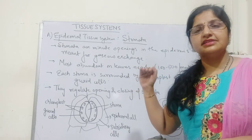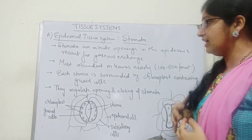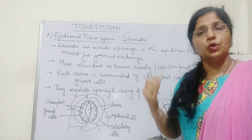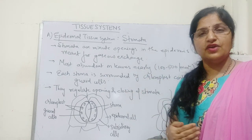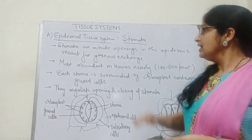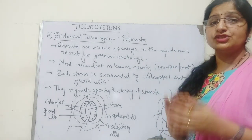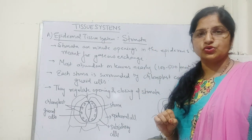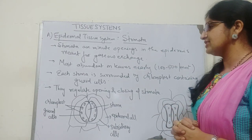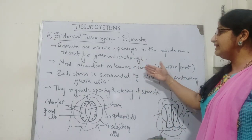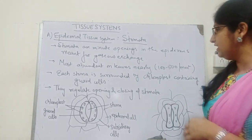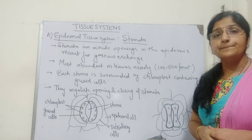A very important characteristic feature of the epidermal tissue system is the stomatal apparatus. The epidermis lining possesses certain openings for the exchange of gases during photosynthesis and to allow a little water evaporation for transpiration. These openings are called stomata or stoma, which are minute pores present in the epidermis for gaseous exchange, most abundantly found on leaves — nearly 100 to 500 per square millimeter — and also found on young stems.